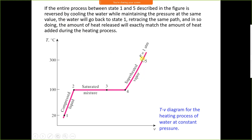This process can be reversed by removing heat. Starting from point 0.5 — superheated steam at atmospheric pressure — if we cool it, the superheated steam converts into saturated steam. If we then remove the latent heat, saturated steam converts into saturated water. If we cool it further, saturated water converts into subcooled water.